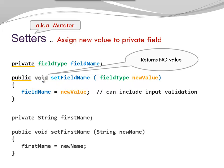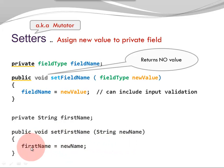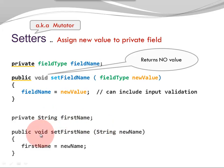Here is an example. I have a 'private String firstName'. I have a setter that allows me to change the first name with a new name. This is the new value that is going to be assigned to the field firstName. Also notice the parameter type needs to match the field type, and here I have void, so my setter is not returning any value.